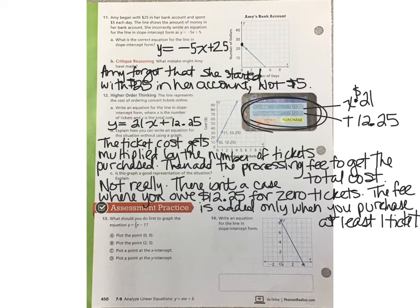In part C, it asks if the graph is a good representation of the situation. And the answer is, well, not really, because there is a point on the graph that doesn't make any sense. I would never owe $12.25 unless I bought a ticket. So 0, $12.25 is not really a point that I would find on this graph. The graph essentially would start at the point 1, 33.25 to represent that as soon as you purchase one ticket, then you have to pay that processing fee. But if you haven't purchased any tickets at all, you certainly wouldn't have to owe somebody a processing fee for tickets that you don't have.